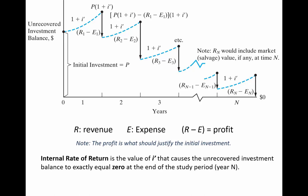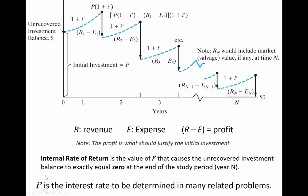The internal rate of return is the interest rate value that causes the unrecovered investment balance to go down to zero at the end of a certain number of years. Broadly speaking, i' is the variable we assign for the interest rate we're solving for. Today I'm going to tell you an interest rate and we're going to simulate the calculations showing an unrecovered investment balance going down to zero, but in many other cases i' would be the unknown.